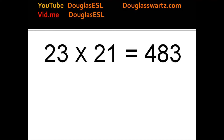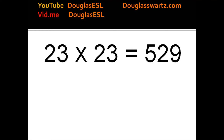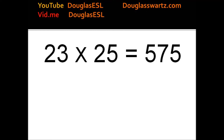23 times 21 equals 483. 23 times 22 equals 506. 23 times 23 equals 529. 23 times 24 equals 552. 23 times 25 equals 575.